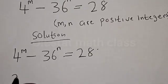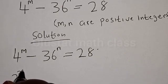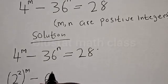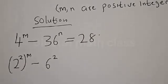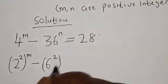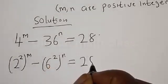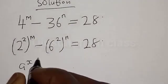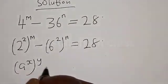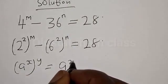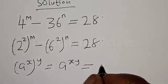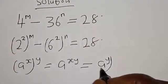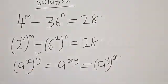Then we have 2 squared raised to power m, minus 6 squared raised to power n, is equal to 28. Now remember, if you have a raised to power s raised to power y, it is the same thing as a raised to power s·y, which is the same as a raised to power y raised to power x. Therefore this equation becomes...